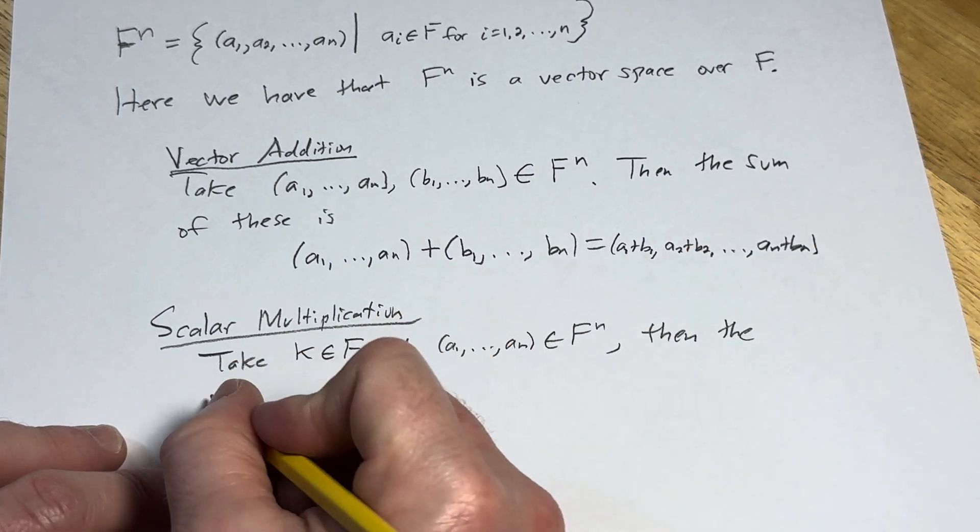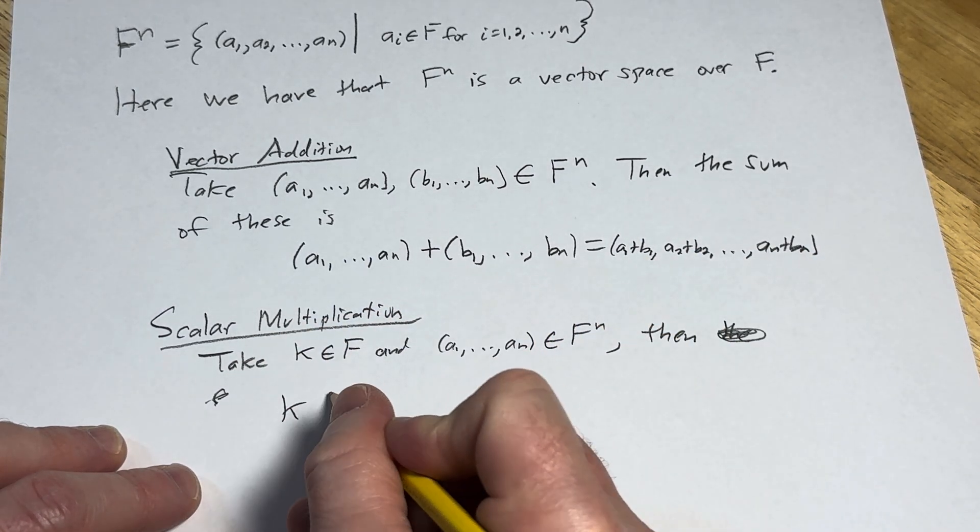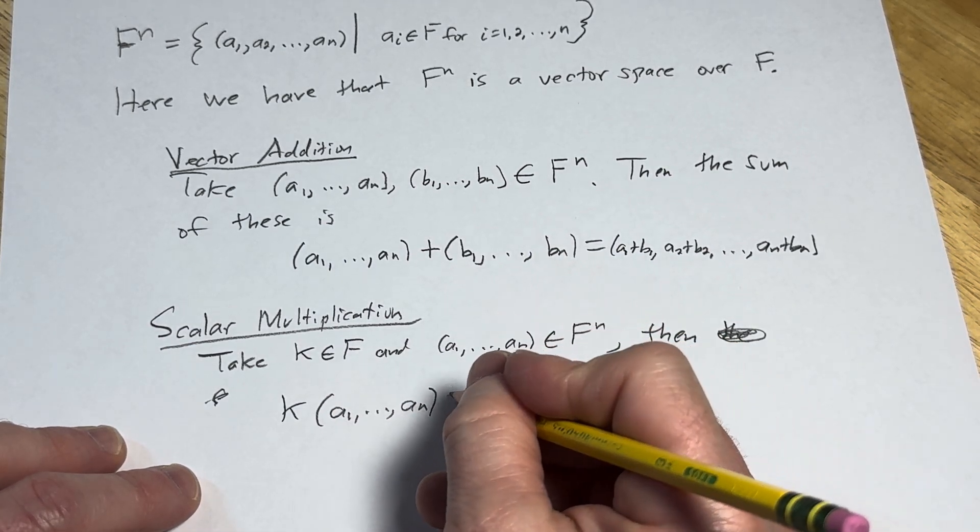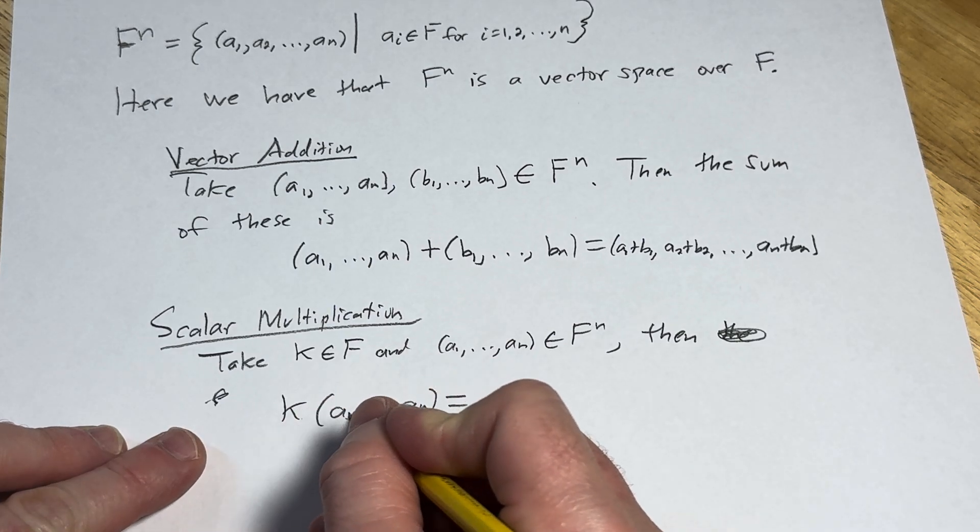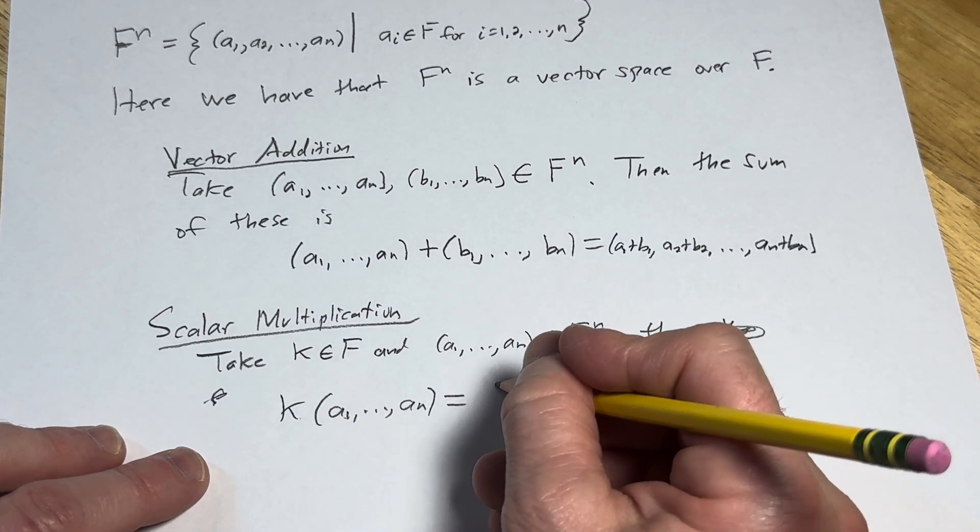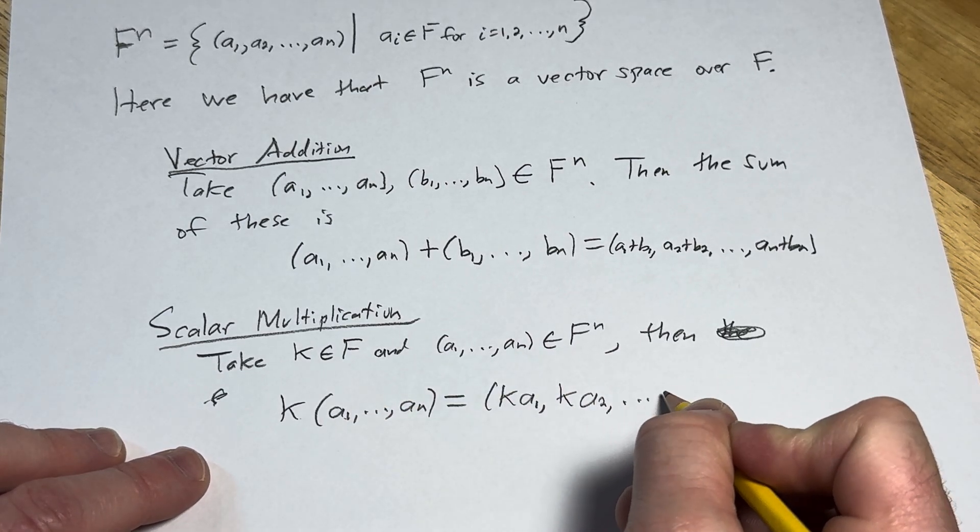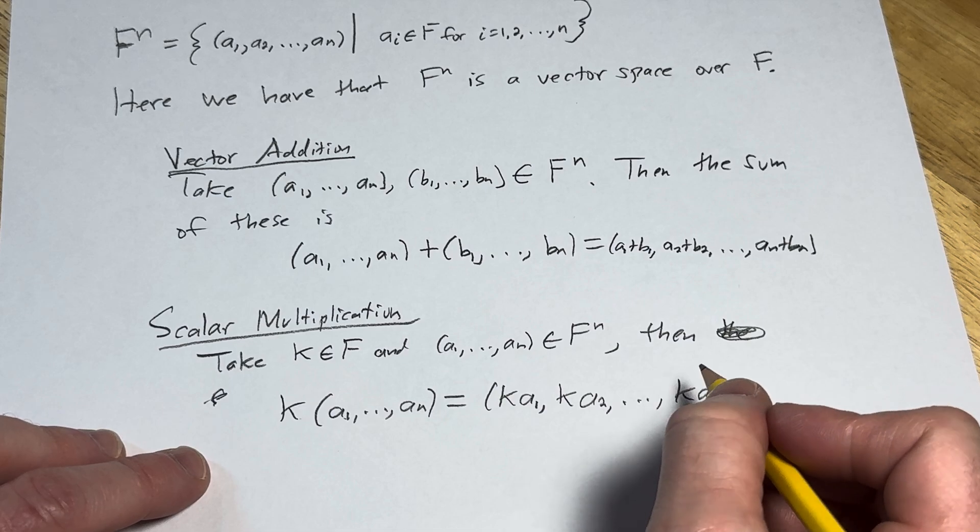Then the scalar multiplication is this. So what you do is you basically distribute the k through all of the components. So it'll be k·a_1, and then k·a_2, and then the last one would be k·a_n. So that's the operation of scalar multiplication.